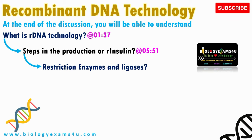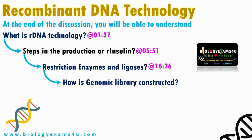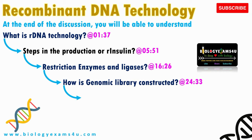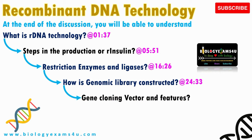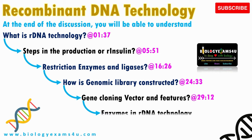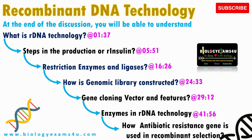We will cover restriction enzymes and ligases, the most important tools used in recombinant DNA technology, followed by the construction of genomic library from which we get our gene of interest for cloning. Then we have gene cloning vectors — what they are, their features, and different types. That is followed by enzymes used in molecular biology and how recombinant colonies are selected using antibiotic resistant genes. All these topics will be discussed within 30 to 45 minutes.